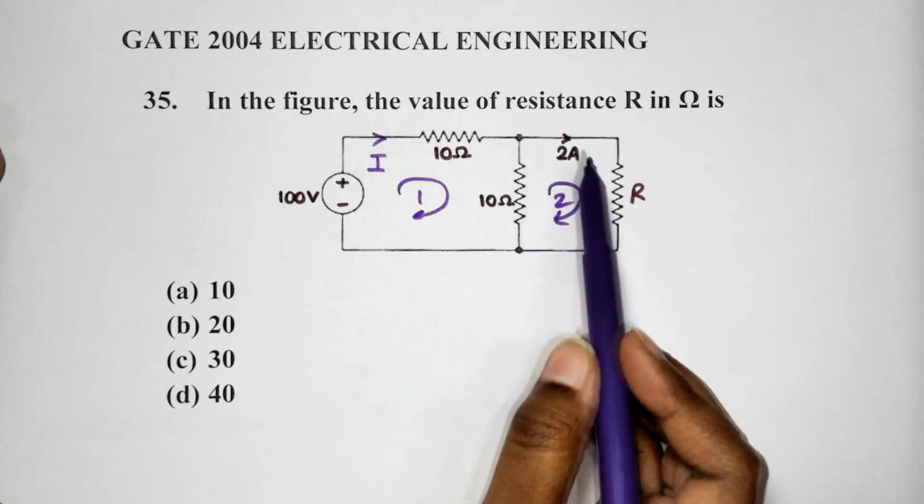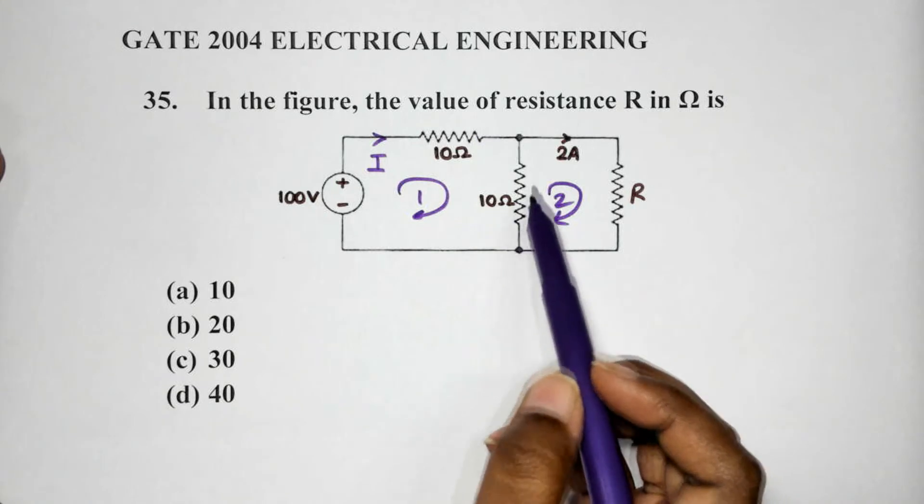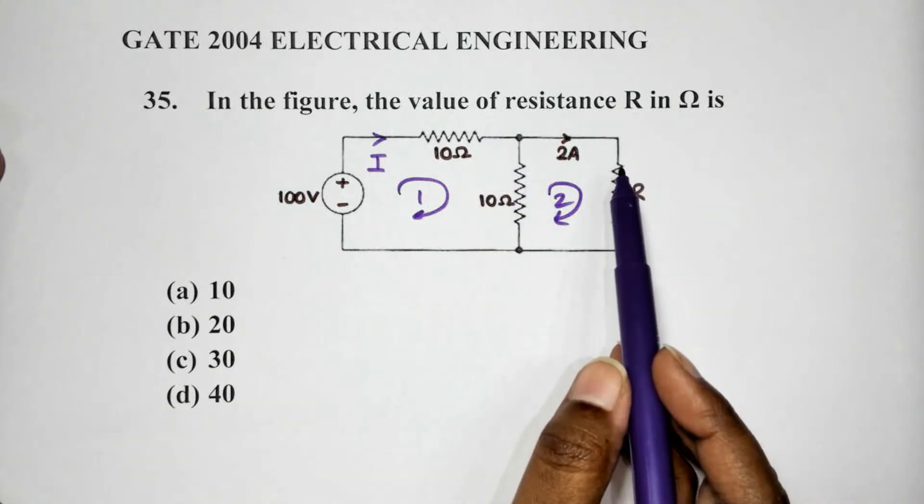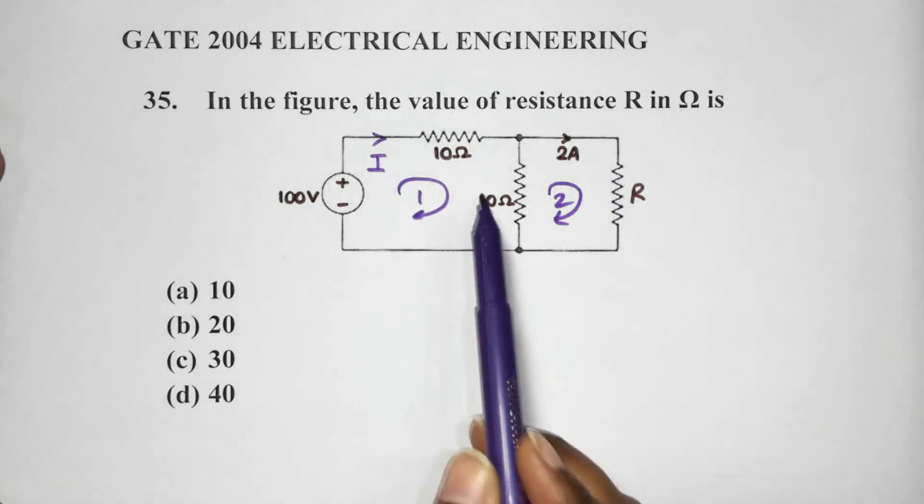Now, this side, anyway, we have it as 2 amps. We still need to find out what is the current passing through this portion in order to find out the value of R. So, let's first apply KVL and find out the expression for this loop here.